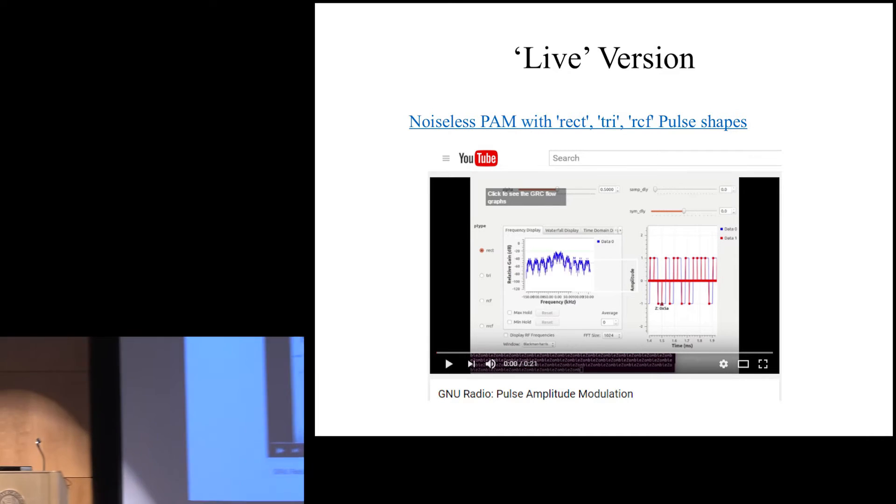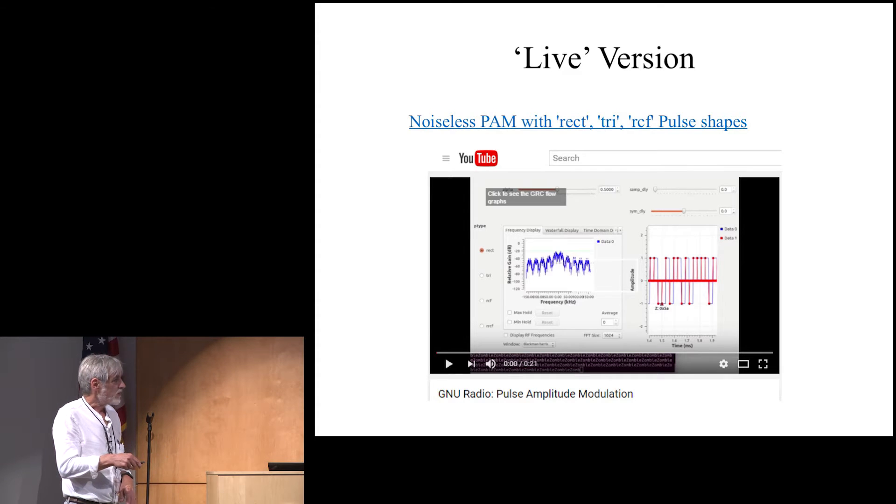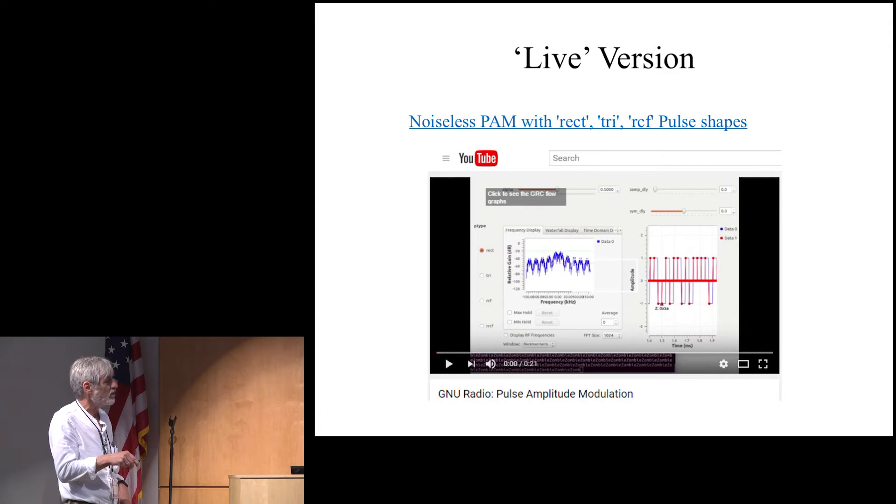Okay, so I'll just tell you in a few words what's happening here. And you can actually look that up on Google or on YouTube as well. If you just choose Mattis and Noiseless Pam, you will probably find this thing here. So what it does is it shows what happens when I use those radio buttons here. So I can use a rectangular pulse, triangular pulse,